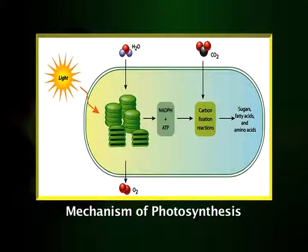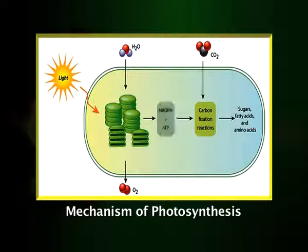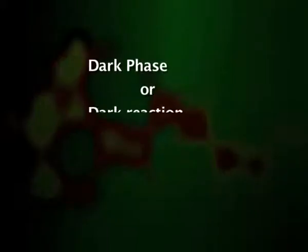During the light reaction, plants capture the energy of light and use it to make the energy storage molecules ATP and NADPH, which is the assimilatory power. In the light-independent dark reaction, the assimilatory power — ATP and NADPH — produced in the light reaction is used to convert carbon dioxide into sugars that can be used by the organisms and other animals that feed on them.